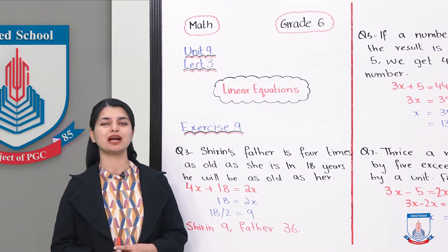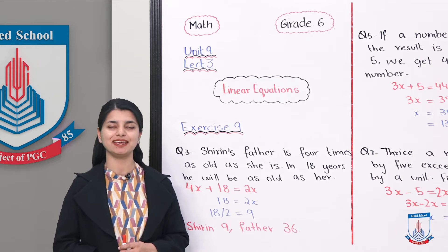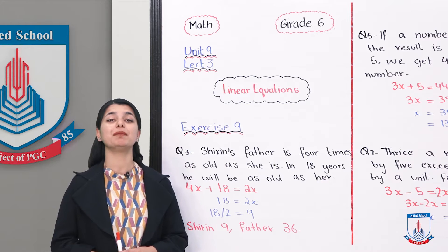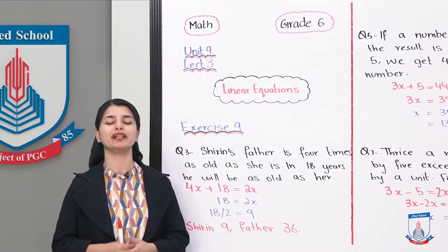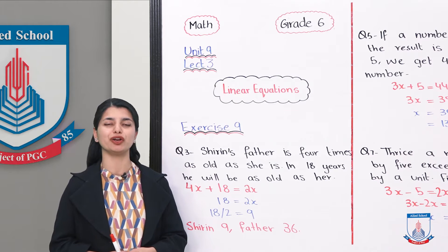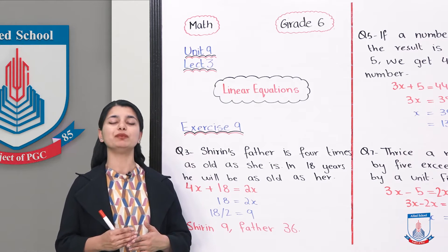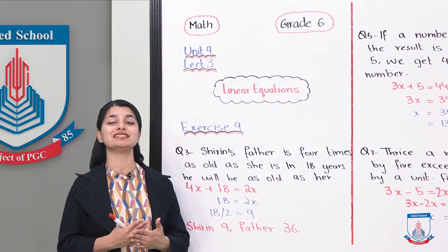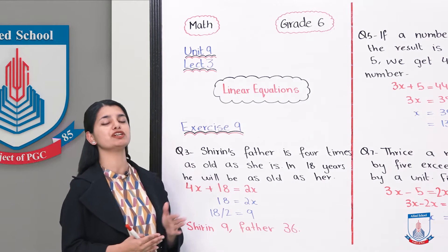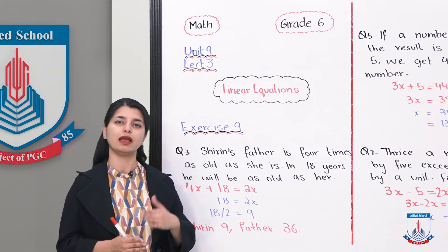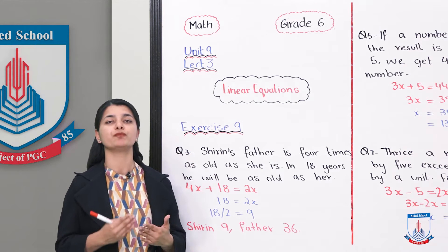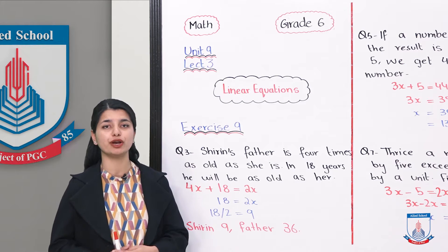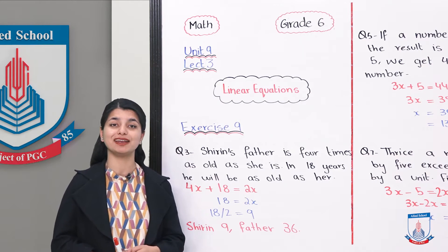In the previous lecture, we did two questions from exercise number 9. Today we have question number 3 onwards to solve. Our method is that we will solve alternate questions and the remaining questions you will do on your own. Alternate means we skip one and choose the other — if we do question 3, we skip 4; if we do 5, we skip 6, and so on. This helps us check if you have understood the concepts.